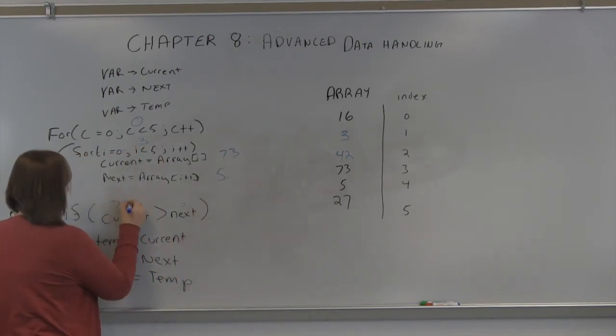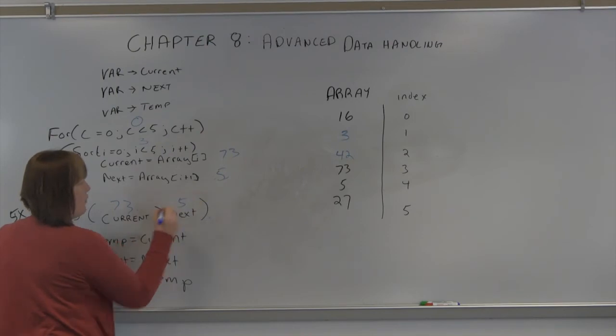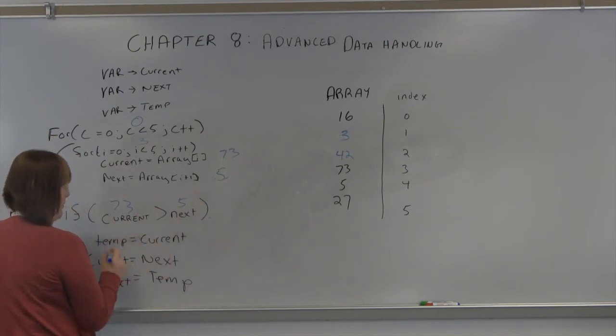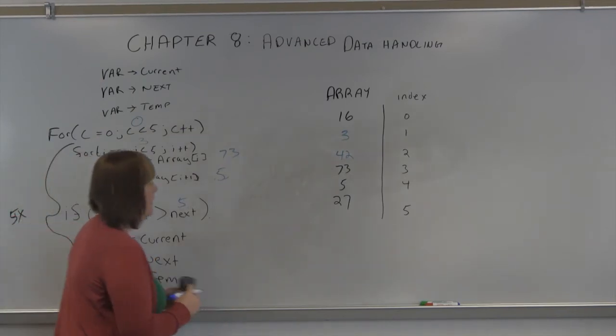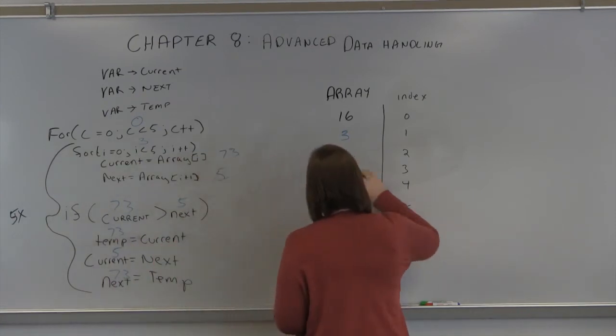If 73 is greater than 5, which it is, temp equals current, 73. Current equals next, 5. Next equals temp, 73. And these two have just swapped places.